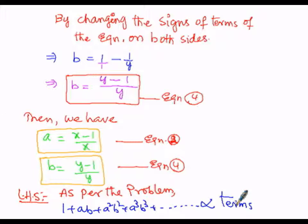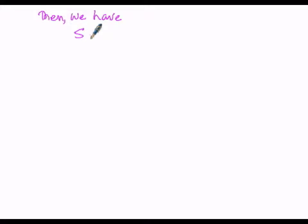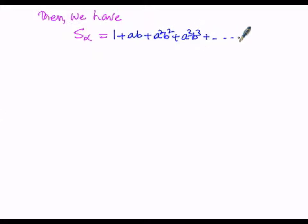Here I want to treat the left hand side quantity as S infinity — the sum of infinity terms. So S of infinity equals 1 plus ab plus a squared b squared plus a cubed b cubed plus dash dash up to infinity terms.